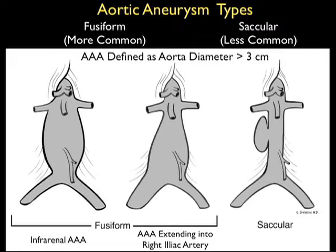Notice the picture towards the middle — some of these fusiform aneurysms can extend from the abdominal aorta all the way down into the iliac artery. The less common type of abdominal aortic aneurysm, known as saccular, is shown in the picture to the far right, where you have a localized outpouching of the abdominal wall.